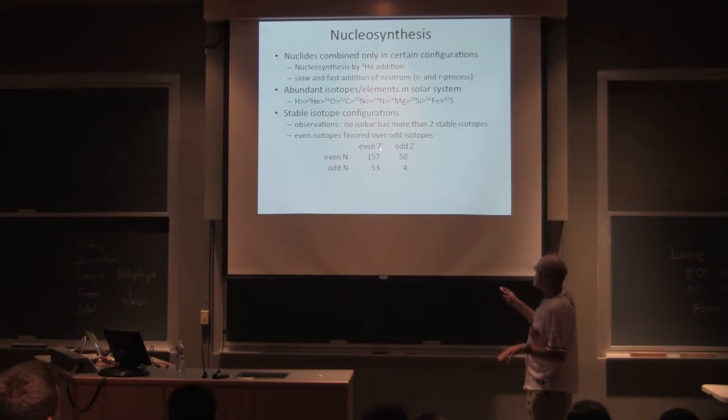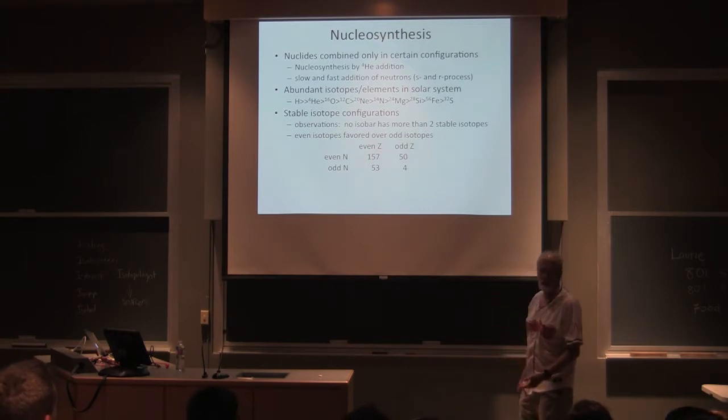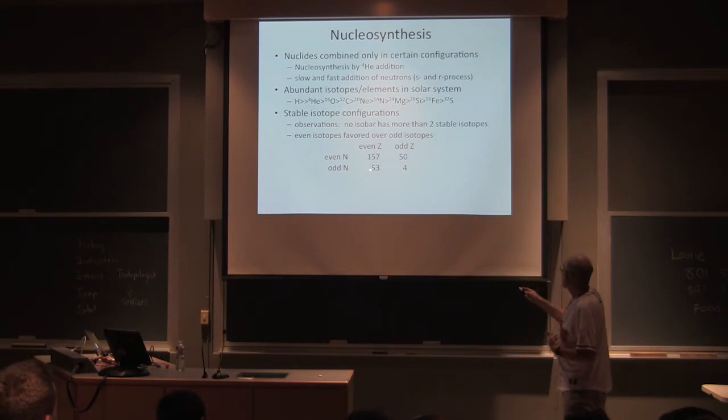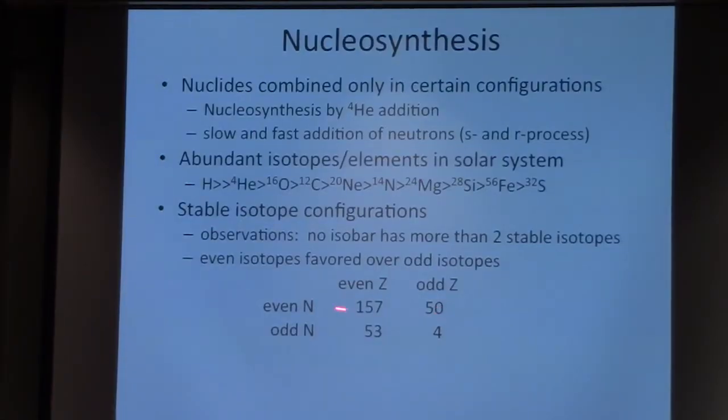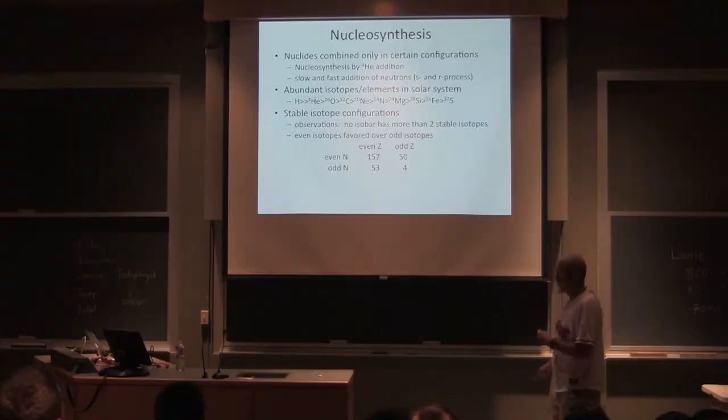Likewise, if we look at the even compared to odd things, we can have even Z, even number of protons, and we can have an even N, even number of neutrons. We find kind of an odd situation. Even-even, more than half of the stable isotopes have an even-even pair. Odd plus even are about equally split. And the odd-odd configuration, so odd number of protons, odd number of neutrons, only 4 exist.